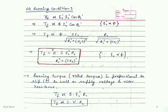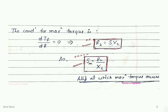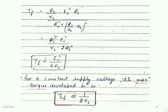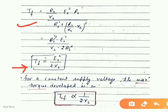For the condition of maximum full load torque, we differentiate the full load torque equation with respect to R and set it equal to zero. This gives R2 = sX2 — the rotor resistance equals the rotor reactance multiplied by the slip value. The slip SM at which maximum torque occurs is defined by this condition. Substituting back, the maximum full load torque equals E2² / (2X2), meaning it is inversely proportional to the rotor standstill reactance.